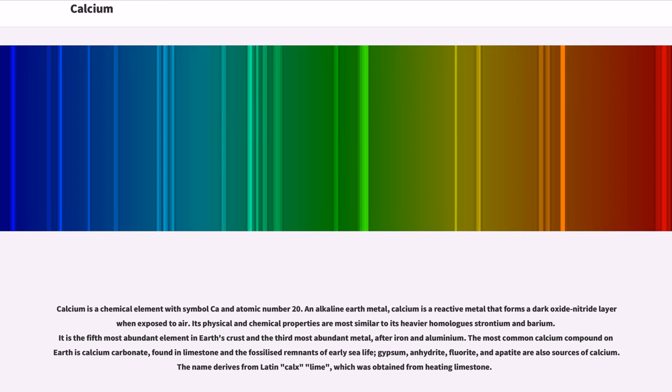Calcium is a chemical element with symbol Ca and atomic number 20. An alkaline earth metal, calcium is a reactive metal that forms a dark oxide nitride layer when exposed to air. Its physical and chemical properties are most similar to its heavier homologs strontium and barium.